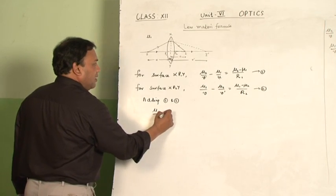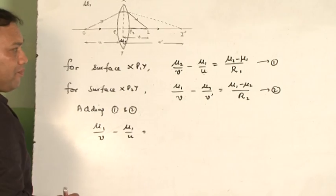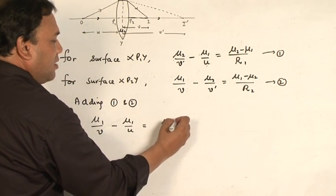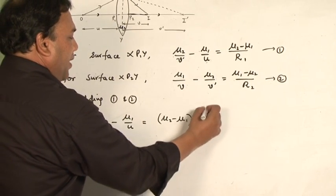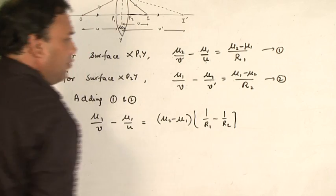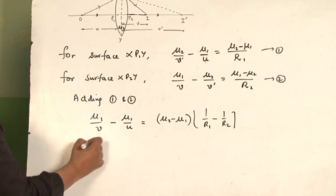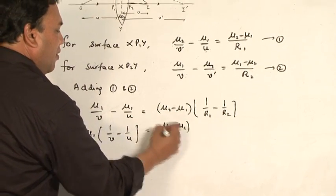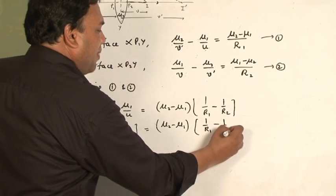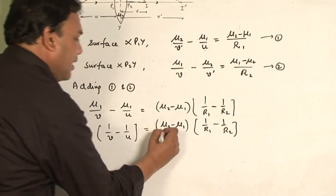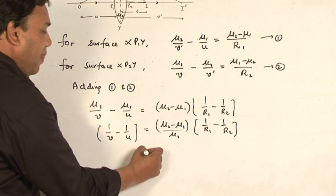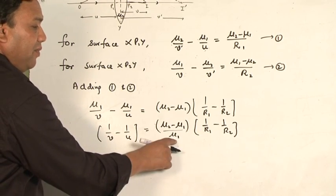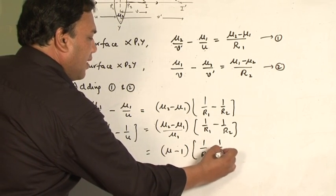The remaining expression equals μ2 minus μ1 multiplied by (1/r1 minus 1/r2). Taking μ1 common on the left side: μ1 times (1/v minus 1/u) equals (μ2 minus μ1)(1/r1 minus 1/r2). Dividing both sides by μ1, and writing μ2/μ1 as μ, we get: 1/v minus 1/u equals (μ minus 1)(1/r1 minus 1/r2).